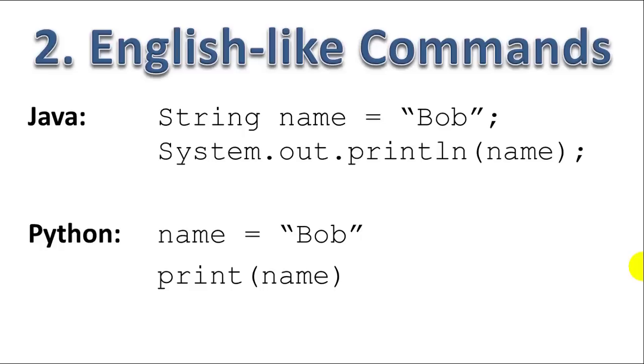So take these two commands. In Java, we would just want to print a string named Bob, let's say. So we assign this value Bob to variable name. First, we have to declare name as a type string. We have to add a semicolon at the end of the line here, which we don't have to use in Python. We can simply say name equals Bob.